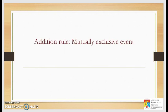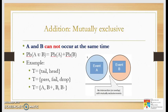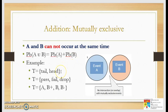Next is the addition rule for mutually exclusive events. A mutually exclusive event is one where both events cannot occur at the same time — there is no intersection. The formula is: probability of A or B equals probability of A plus probability of B, with no subtraction term. For example, if you toss one coin, you can only get either tail or head.